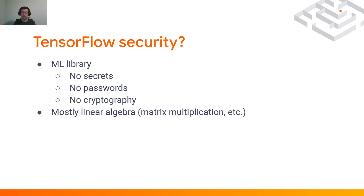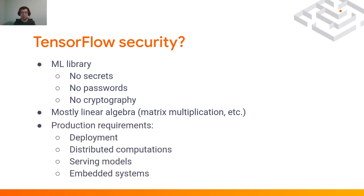If we look more at what TensorFlow does, we see that it also handles some production requirements. We have the case where a model needs to be deployed on a large production environment. We have large models that need to distribute their computation across several computational nodes. We have the scenario where one application uses multiple models and, depending on the input, switches from one model to the other. We also have the scenario of embedded systems — a lot of pixel phones, when you say OK Google, are using TensorFlow Lite, which resides in the same repository.